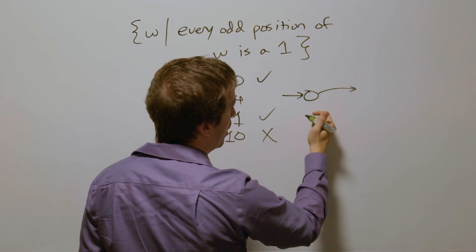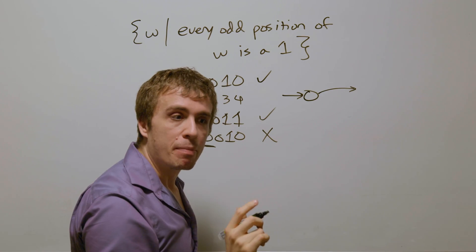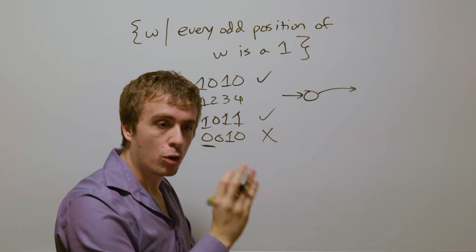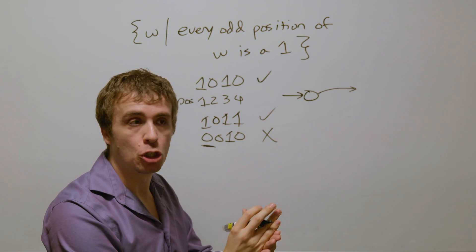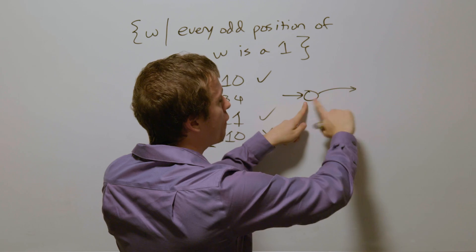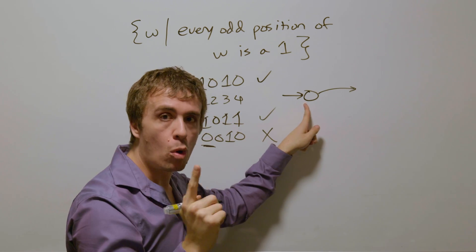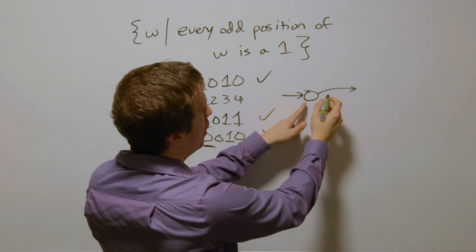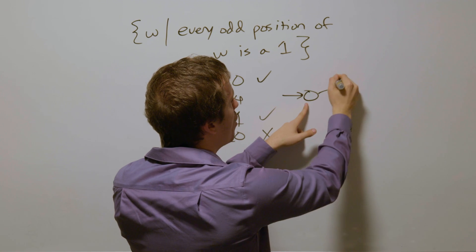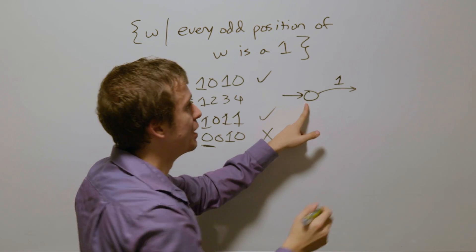If we have a start state right here, I'm going to notate that to mean that we are currently going to read the odd position character. So right here, the very first thing that it reads is position one, and therefore is an odd position. So therefore, we need to read a one right here in order to be in that language in the first place.